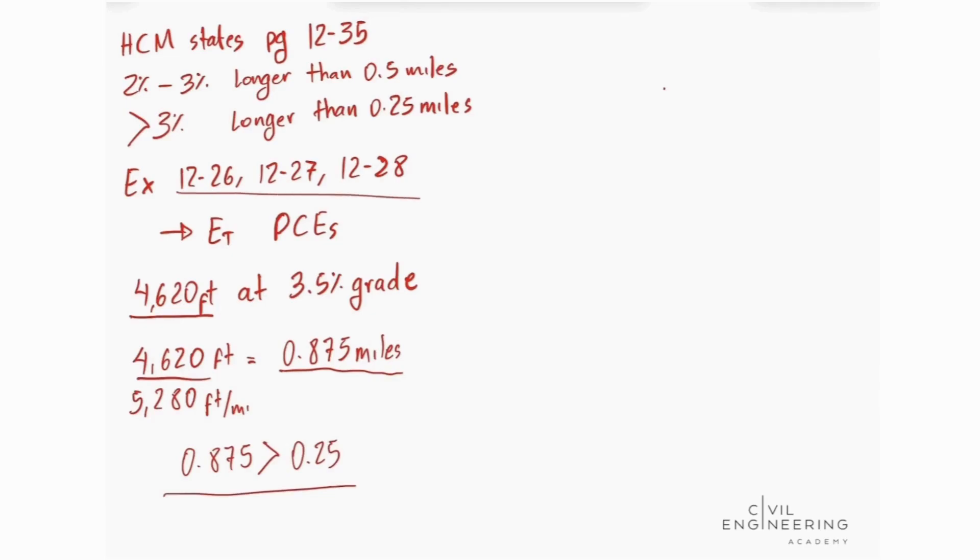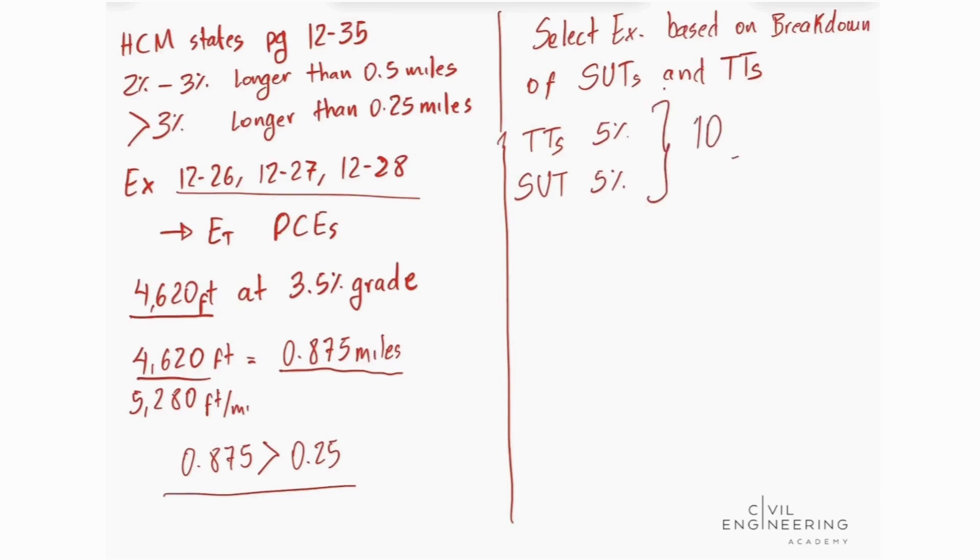So we're going to need to use one of the tables part of these exhibits. So we need to now select the exhibit based on the breakdown of SUTs and TTs. We saw that we have 5% of trucks. This is our TTs. And we have our SUTs composed by our RVs and our buses. We calculated this before. This is 5%. And this all represents our total 10% of trucks.